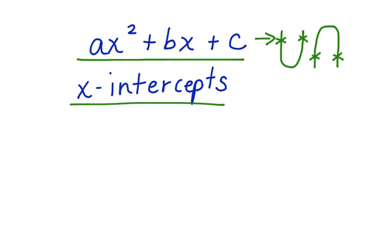Let's look at how to figure out the x-intercepts of a quadratic function. Let's say we have this function, x-squared plus 4x minus 12. And we want to figure out the x-intercepts for this quadratic function. The first thing we're going to do is factor it.